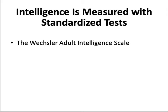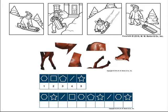In 1939, psychologist David Wechsler developed an intelligence test for adults. Wechsler was dissatisfied with various features of the Stanford-Binet scale, including its reliance on verbal information and its assessment of intelligence by a single score. The Wechsler Adult Intelligence Scale has two parts: verbal and performance. The performance part of the IQ test includes nonverbal tasks.